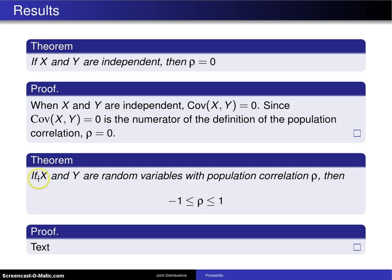Here is a second result. If X and Y are random variables with population correlation rho, then rho must lie between negative one and one inclusive. Now the proof of this is a little bit longer, so it is given in the text.